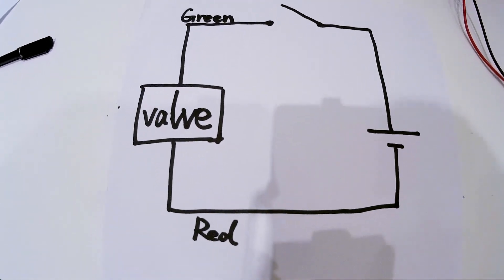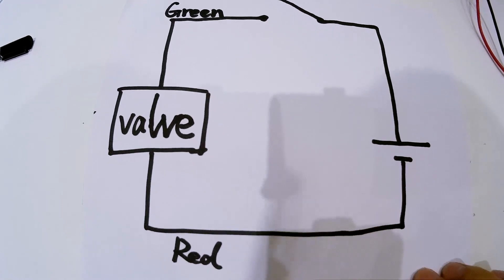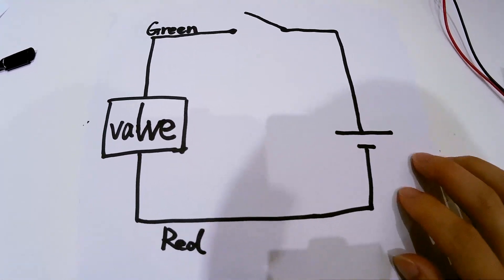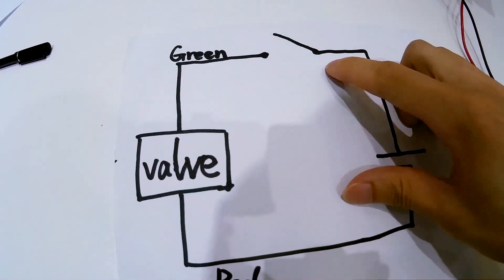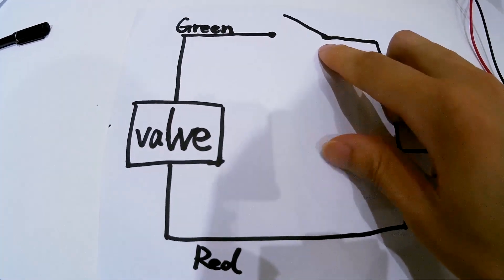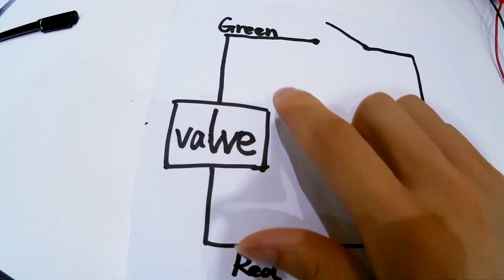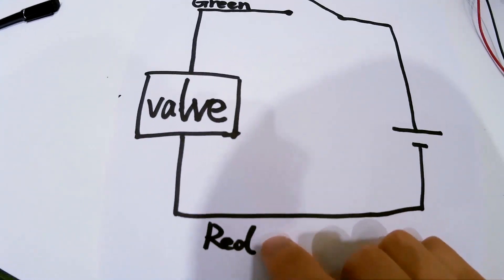Let's check the wire diagram before connecting all the components. Here it is. This is power supply, SPST switch, green wire, valve, red wire.